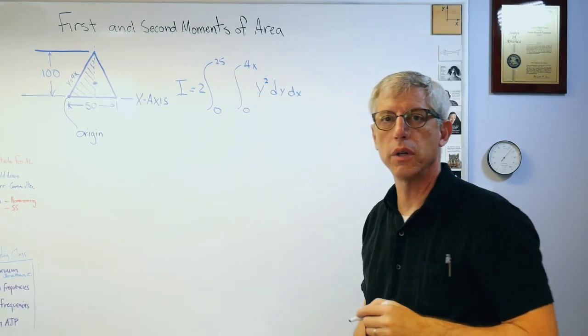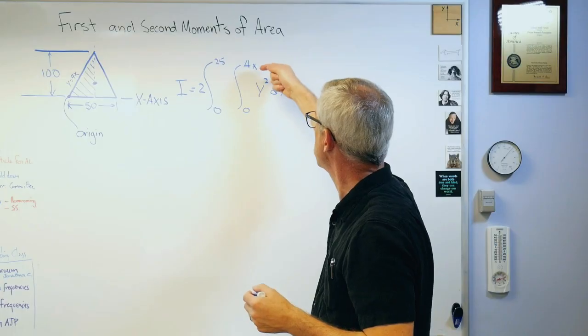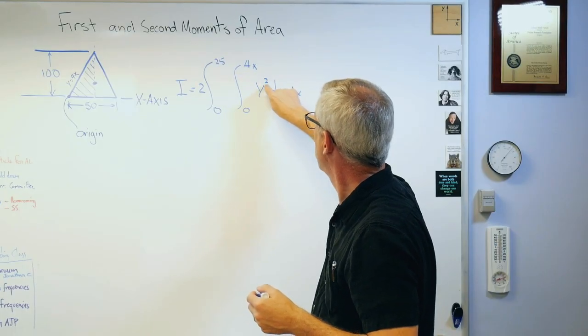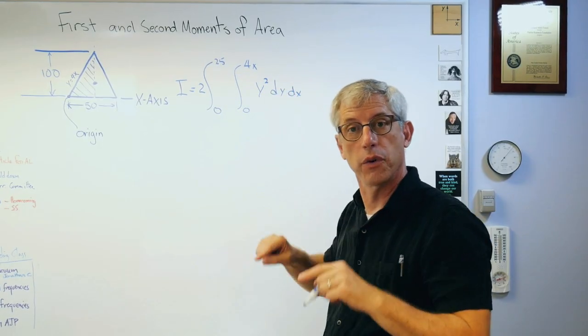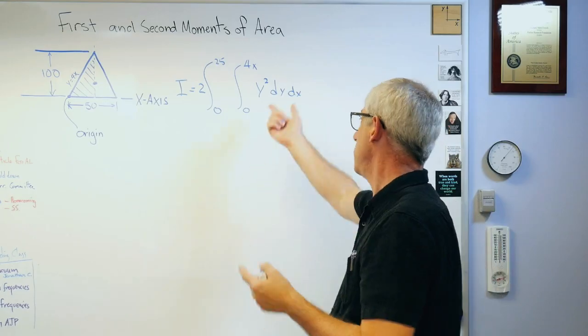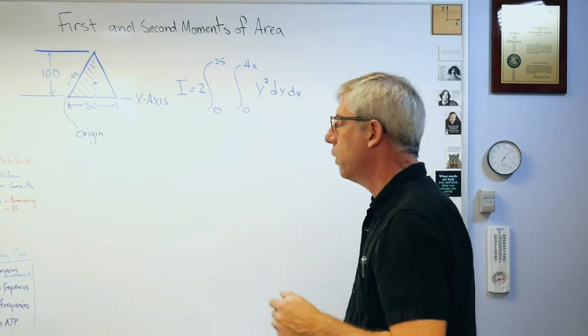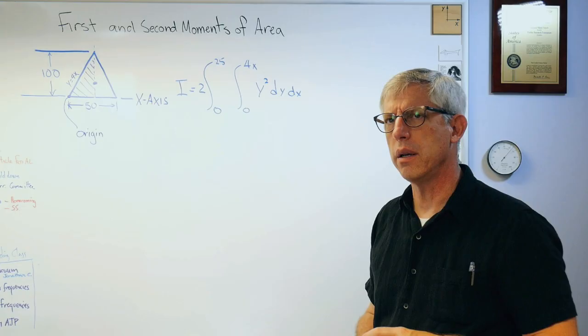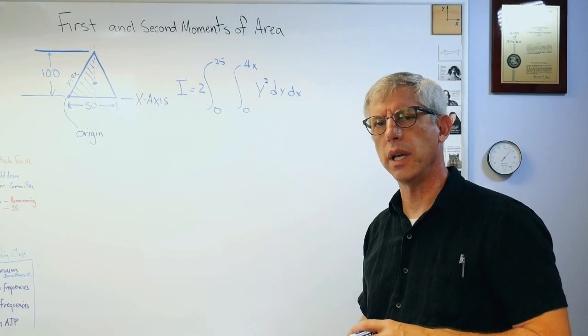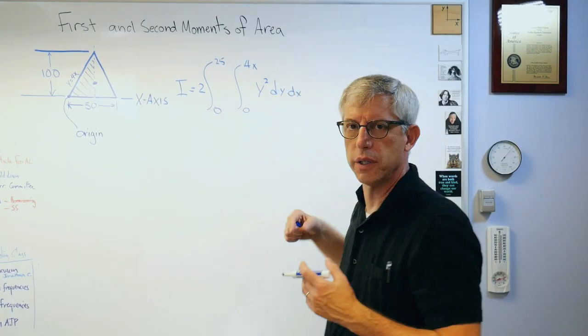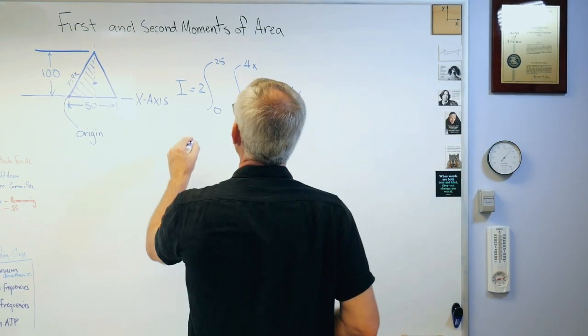That's area moment of inertia. You see how the form of this doesn't change. All I did was change that integer power up there to go from first to second moment. If you want to go to the third moment, make that a three. We don't use third moments in mechanics as far as I've ever seen. There's probably some use for this, off the top of my head I don't know what it is.